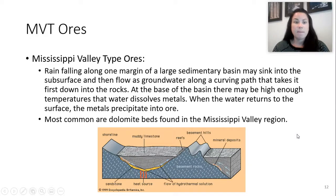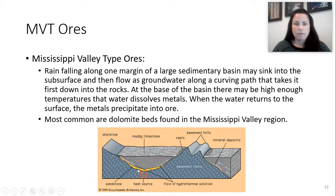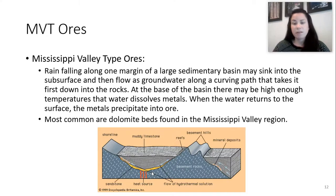Next is the Mississippi Valley type — a really specific type. Rain falls along one margin of a large basin, sinks into the subsurface, and groundwater flow takes it down into the rocks. At the base of this basin there's a heat source, or enough pressure, to dissolve these metals. This type is specifically seen in dolomite beds in the Mississippi Valley region.